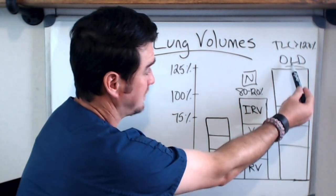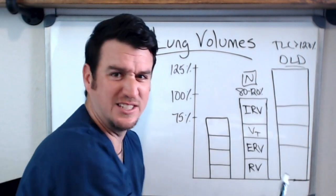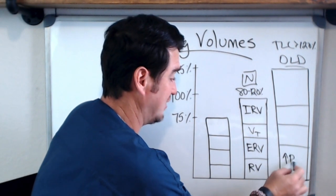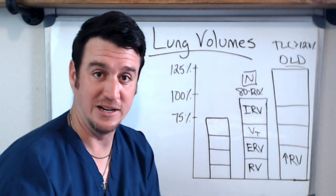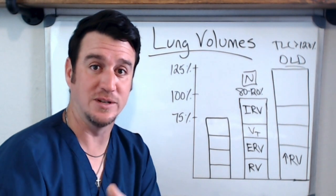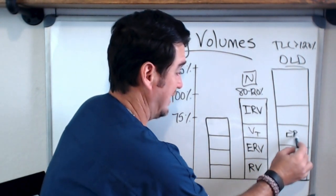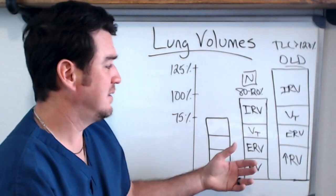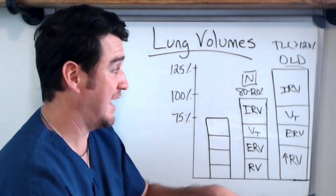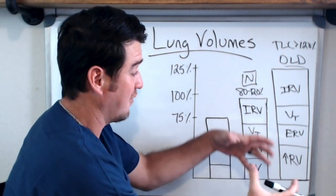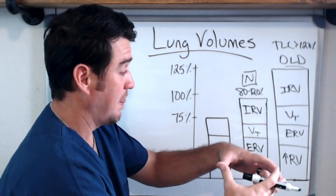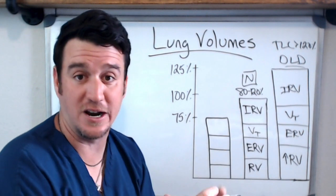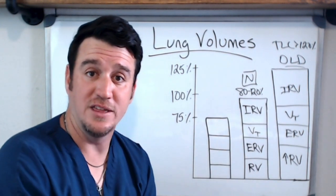Let's look at the obstructive lung disease — let's say emphysema. You can see the RV has increased. Why? Chronic air trapping leads to an increase in residual volume. Their ERV is still there, tidal volume, and then IRV. What you actually see is that RV and ERV make up an enlarged portion of the volume, and IRV is very small because of hyperinflation.